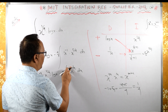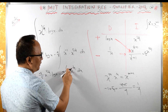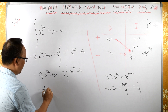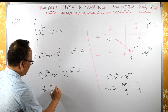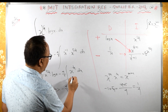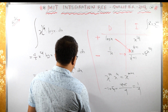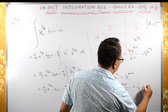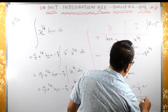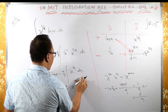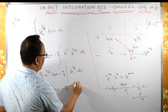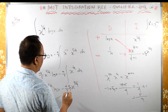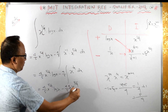So it is 1/4 only. We have 4/5 x raised to 5/4 log x minus 4/5 times the integration of x raised to 1/4. Integrating x raised to 1/4: 1/4 plus 1 is 5/4, so we get x raised to 5/4 upon 5/4, which is 4/5. This gives us the factor 4/5.